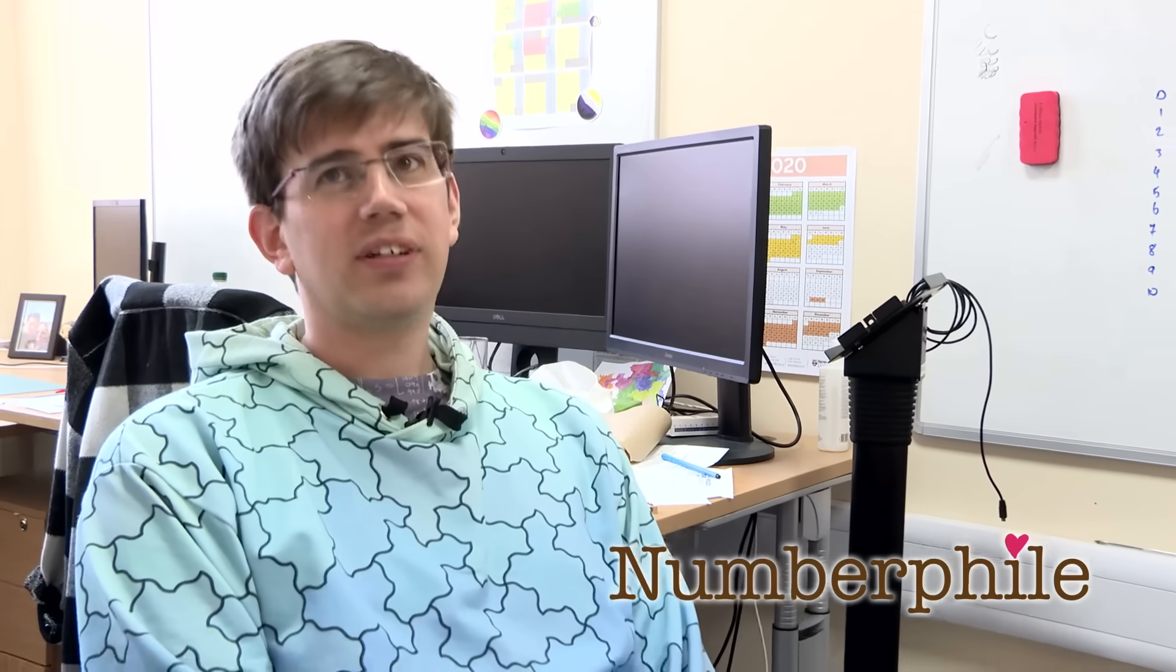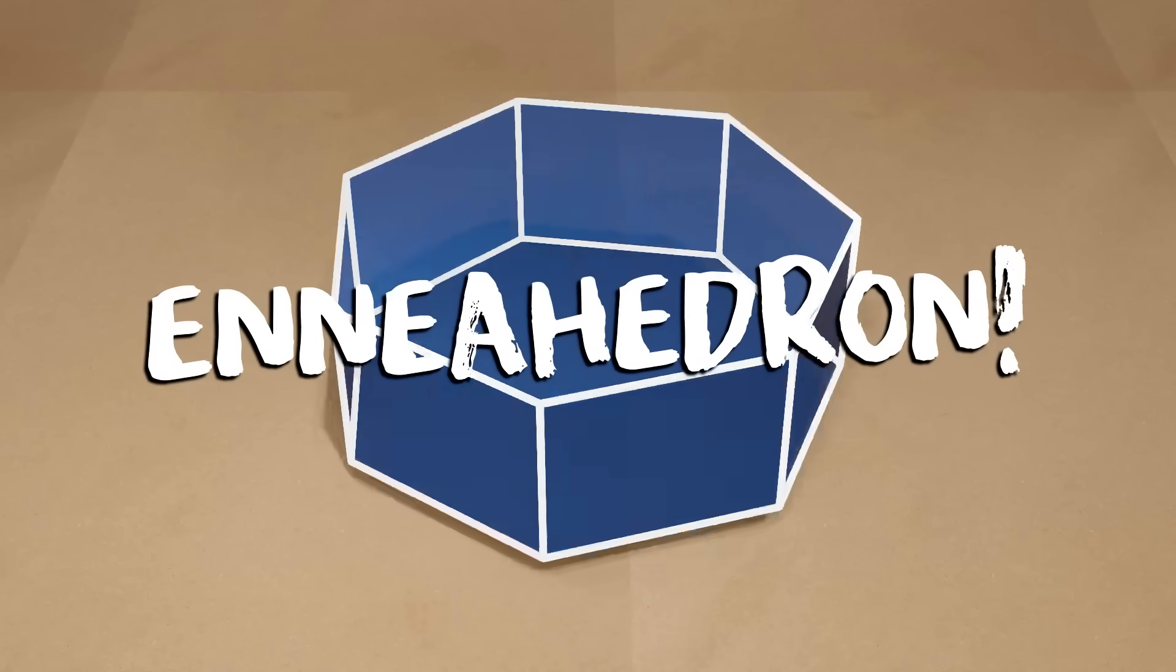I'd like to show you a polyhedron, not just any polyhedron though, this is an enniahedron. It's a polyhedron with nine sides. Ennia, I don't know, is the Greek word for nine as far as I know. This is also called the Herschel polyhedron.